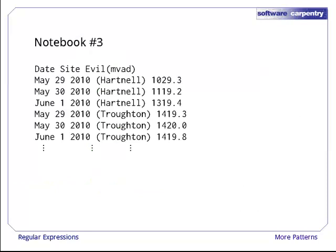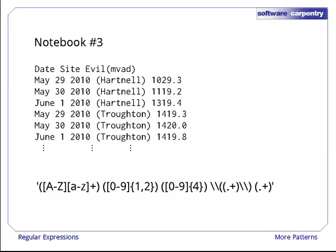With that out of the way, let's go back to notebook number three. The regular expression that will extract the five fields from each record looks like this. A word beginning with an uppercase character followed by one or more lowercase characters. A space. One or two digits. Another space. Four digits. Another space. Some stuff involving backslashes and parenthesis. Another space. And then one or more characters, which is the reading.